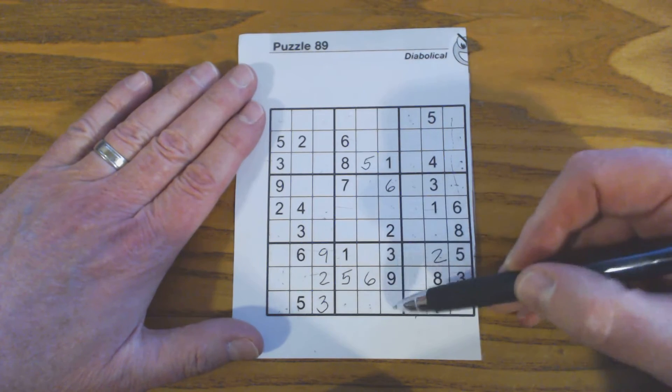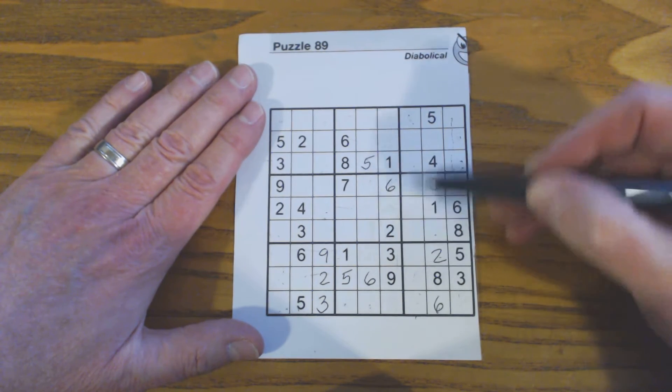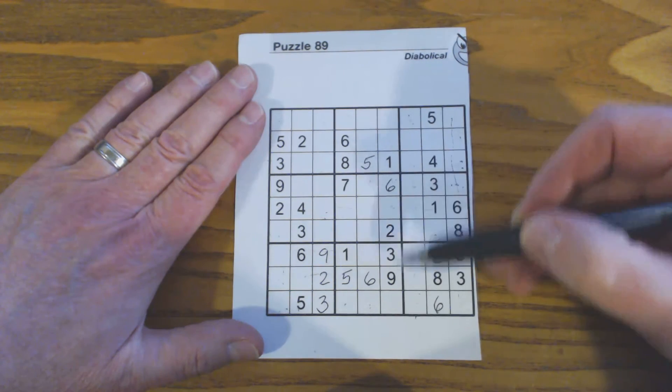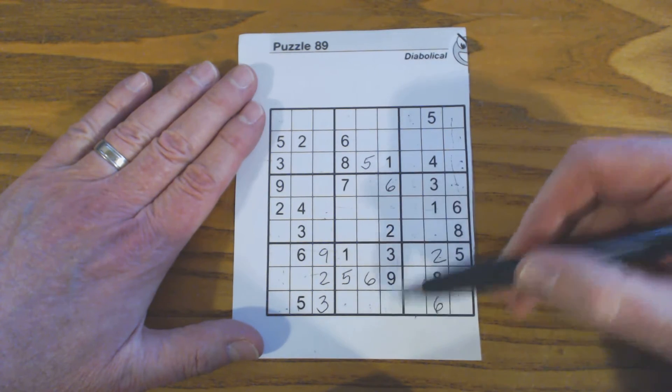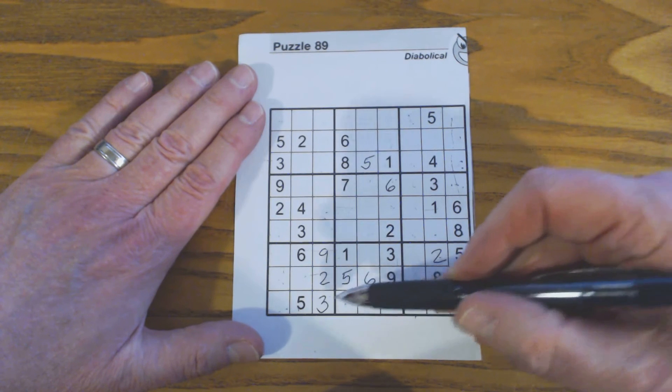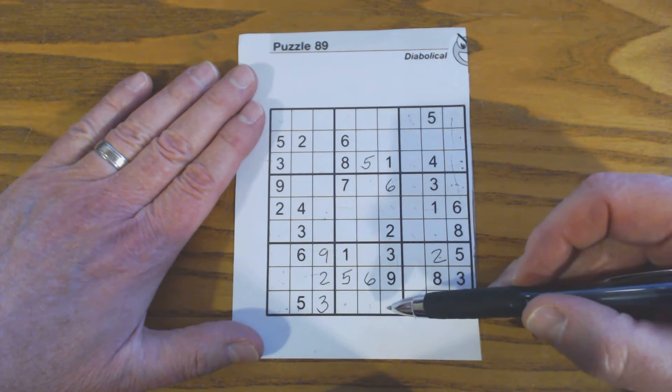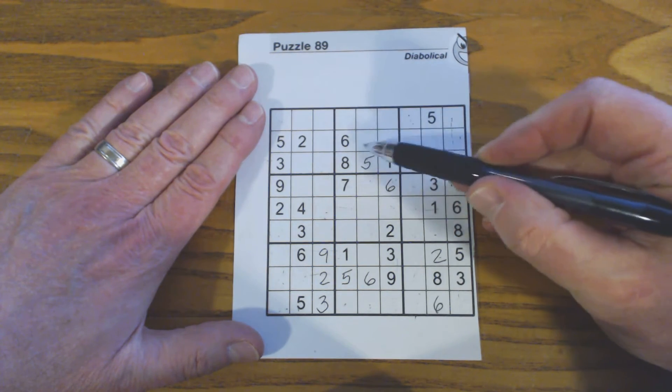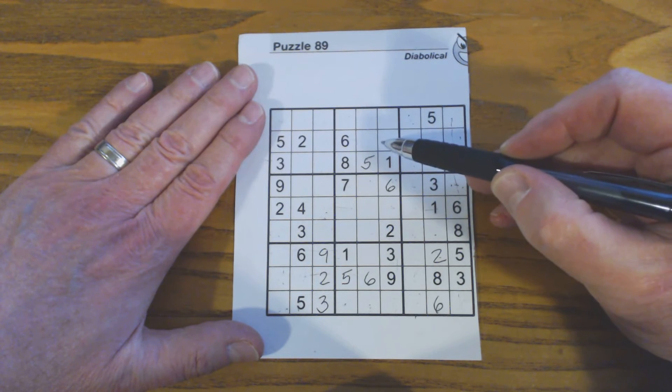So let's see what these two numbers are. 1, 2, 3, 4, 5, 6, 7, 8, 9. So this is a 5 and an 8. And there's a 5 here, so we could put an 8 there and a 5 there. So we found two numbers because of this triplets that we found and these twins that we found.